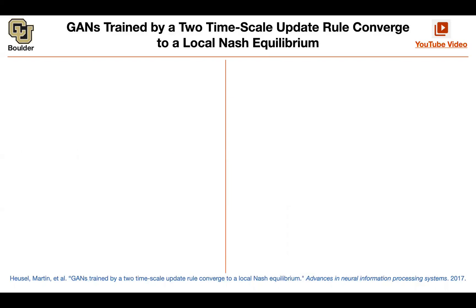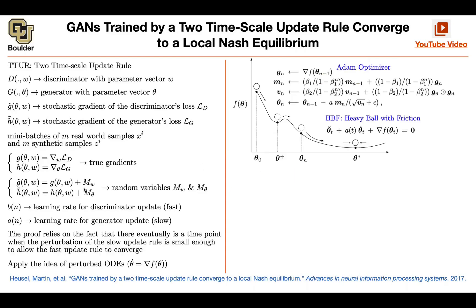The two-timescale update rule has to do with the training process — specifically modifying your optimizer. The big picture is that throughout training you are not going to be seeing your true gradients, whether for your discriminator objective function or your generator objective function. You never have access to your true gradients for computational and memory reasons. You work with small batches of data, so all you have access to are noisy approximations to your gradients.